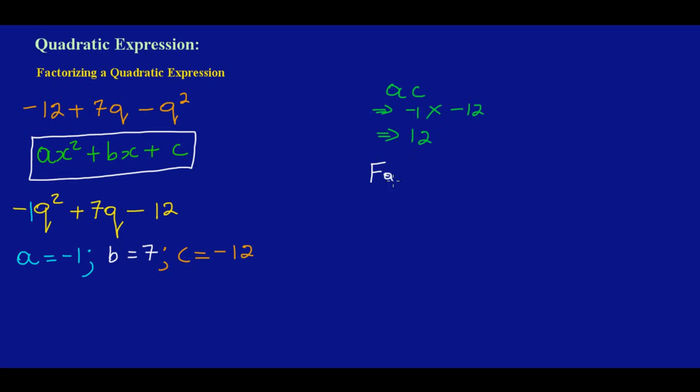Now after finding the product, we need to find the factors of the product ac. So we're finding our factors of the product. Factors of 12 are 1×12, then we have 2×6, then we have 3×4. By intuition, I know we should get used to the fact that I need a positive 12, but I need to add two numbers. The same factors must give me a positive 7 when they are added.